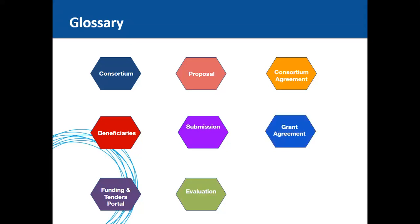The grant agreement is the funding agreement concluded between the European Commission or funding agency and the project participants. It specifies the rights and obligations of the contracting parties and contains important provisions for implementation, such as eligibility of costs and provisions for handling intellectual property rights.